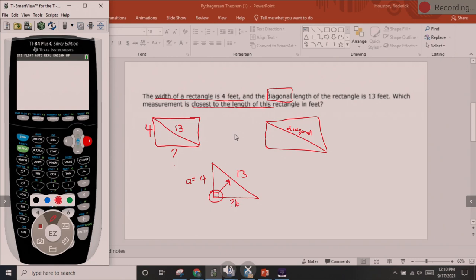Now we're going to write our formula. A squared plus B squared equals C squared. Well, we've got 4 for A. We do not have B, and we have 13 for C.